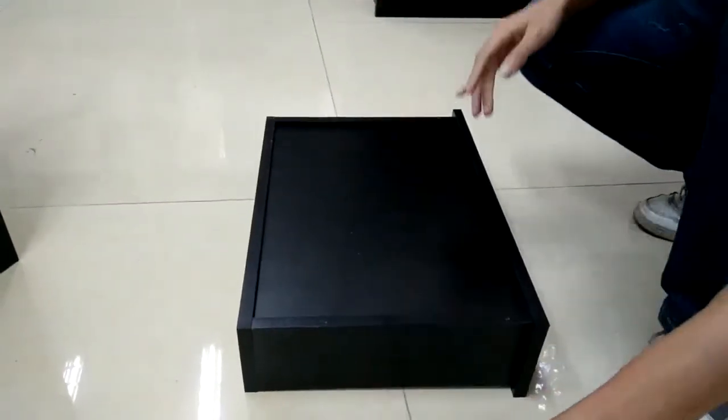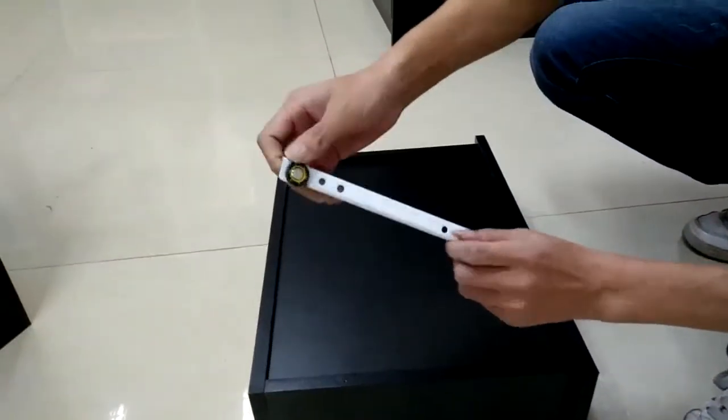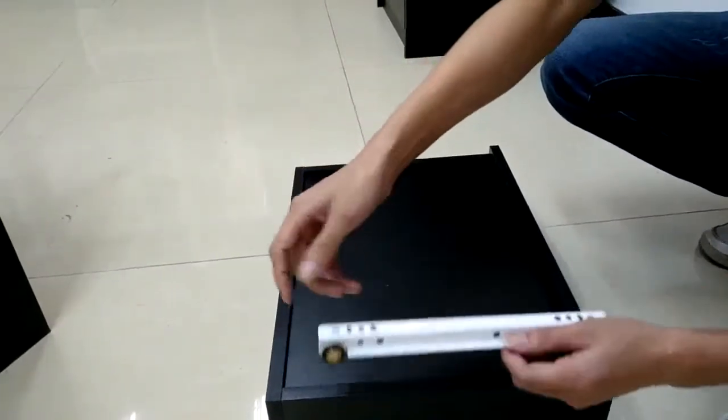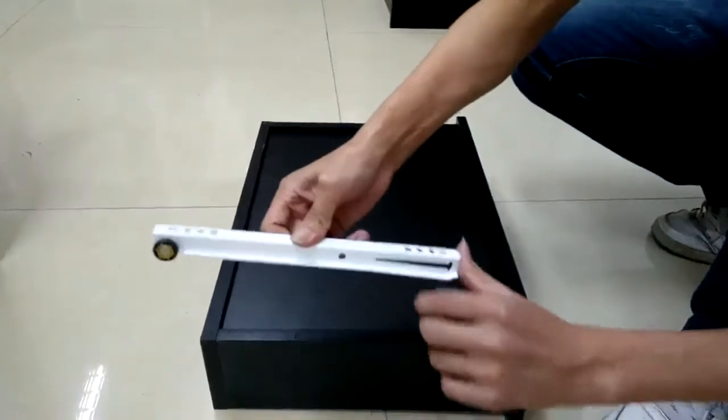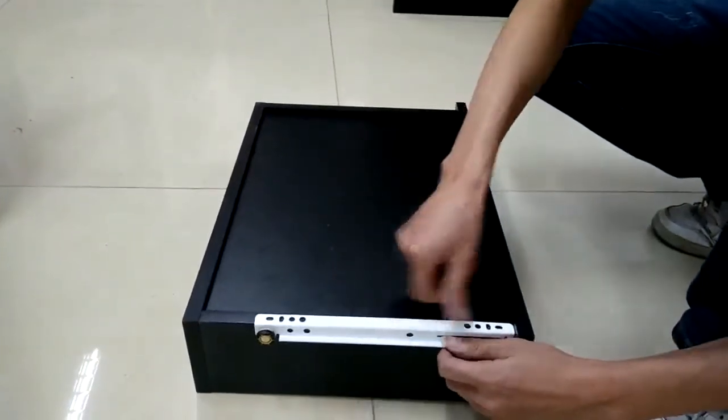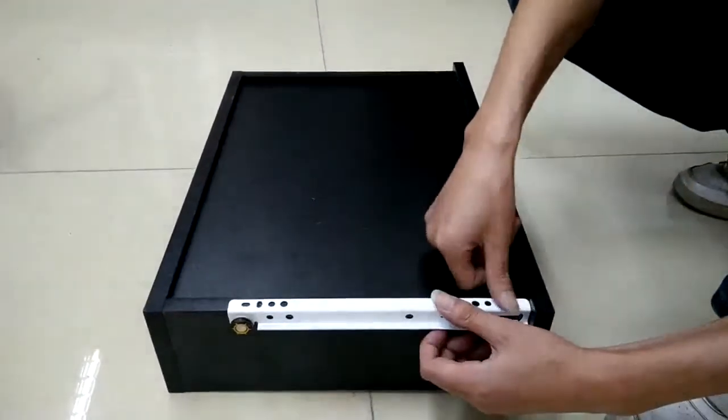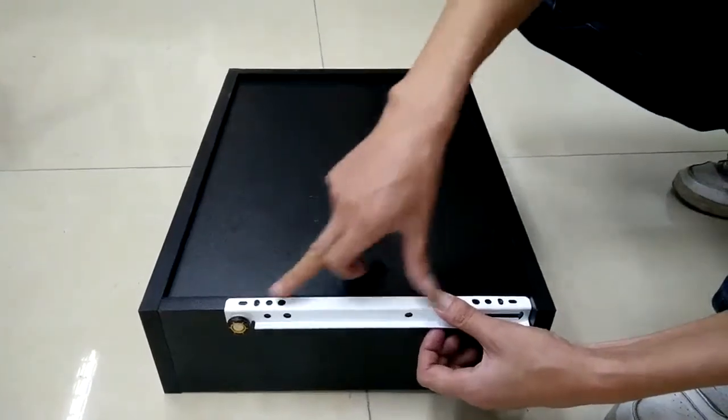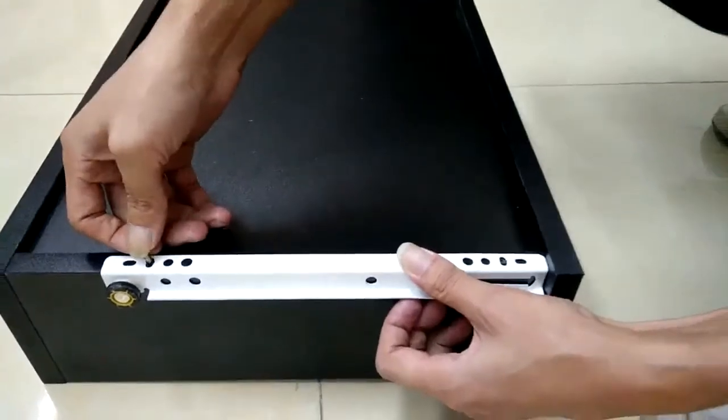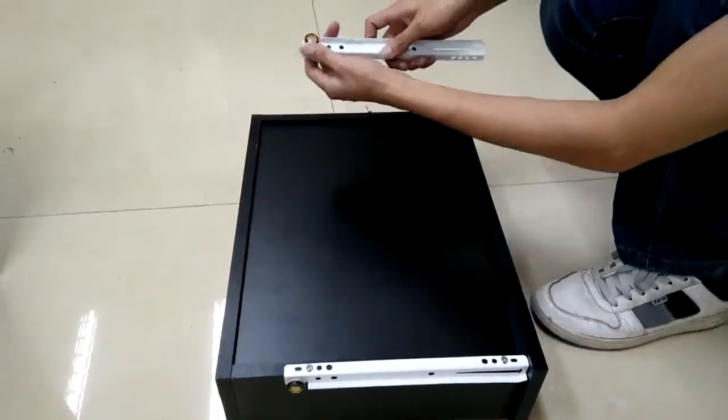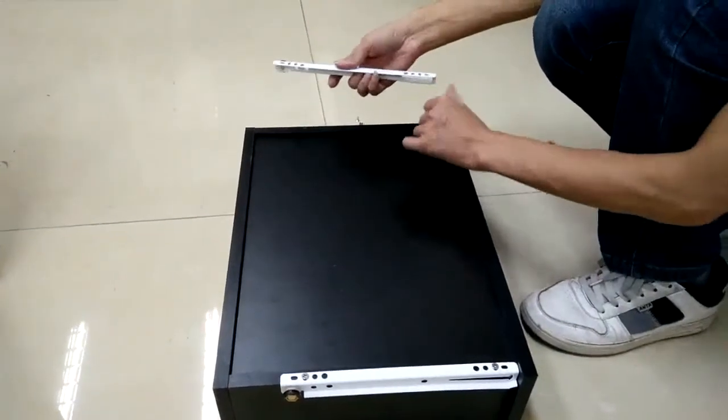Now we will start to install the glides. Make sure the pilot hole is facing toward the bottom of the drawer and the wheel portion is facing front. Align it fully to be flush with the front panel of the drawer, and then put your screw in. Likewise to the other side.